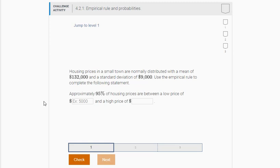Housing prices in a small town are normally distributed. That's really important to know. So what that means is that housing prices follow the bell curve shape with a mean of $132,000 and a standard deviation of $9,000. So use the empirical rule to complete the following statement. Approximately 95% of housing prices are between a low price of something and a high price of something.